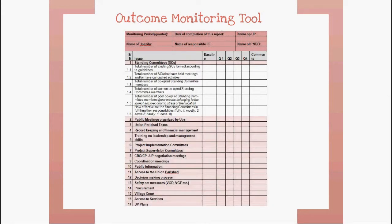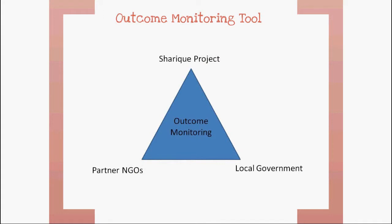In close consultation with the main project partners — namely the donors, partner NGOs and local governments — Shariq developed an Output and Outcome Monitoring Tool. The Outcome Monitoring Tool focuses on a list of 17 outcome indicators and 120 sub-indicators along the three mentioned project outcomes. The cornerstones of the tool are the quarterly outcome monitoring sheets, which gather the relevant information from the field. While Shariq is responsible for the design and quality control of the monitoring process, partner NGOs collect and organize the data together with the local governments.